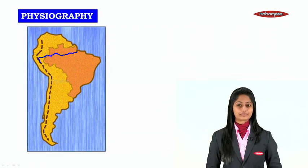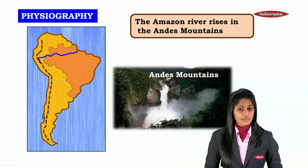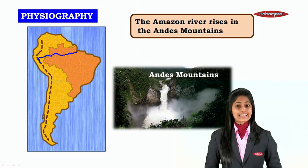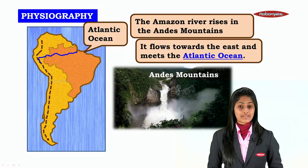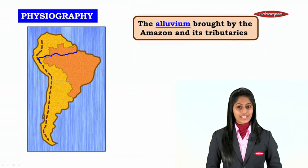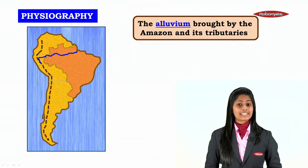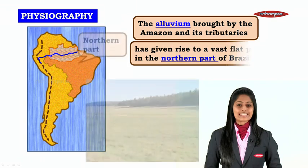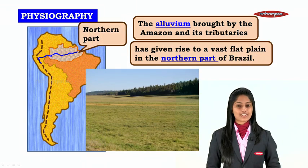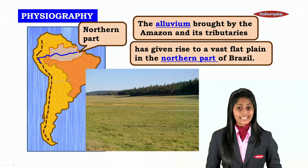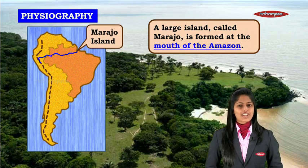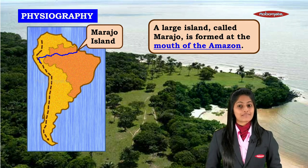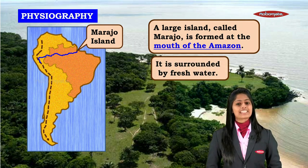The Amazon River originates in the Andes Mountains and flows towards the east, meeting the Atlantic Ocean. The alluvium brought by the Amazon and its tributaries has given rise to a vast flat plain in the northern part of Brazil. A large island called Marajó is formed at the mouth of the Amazon and is surrounded by fresh water.